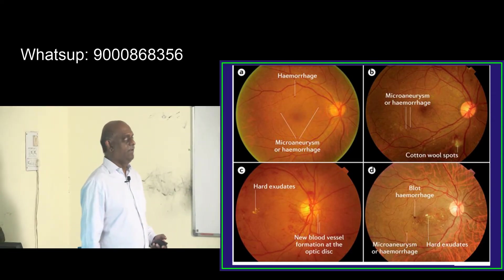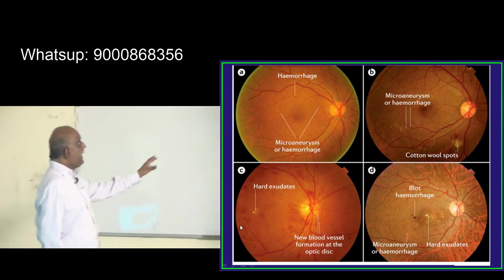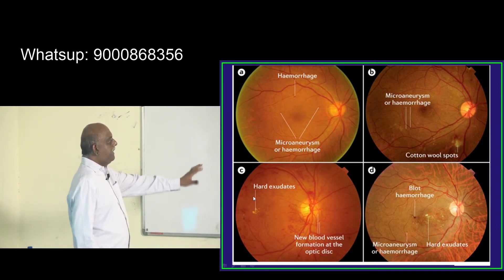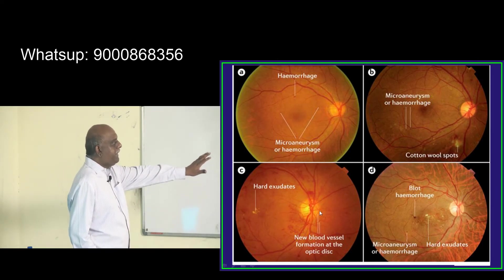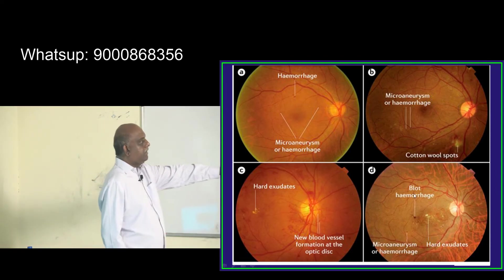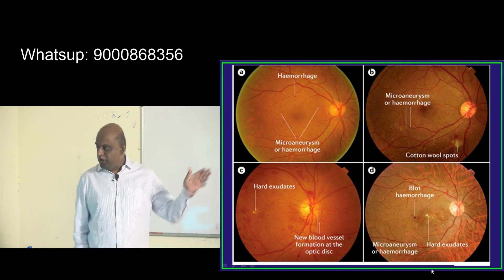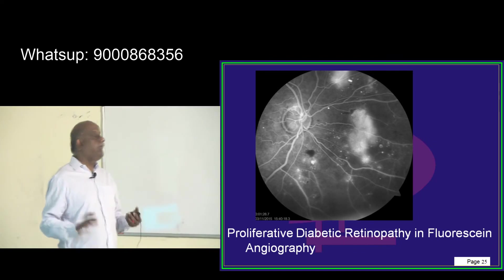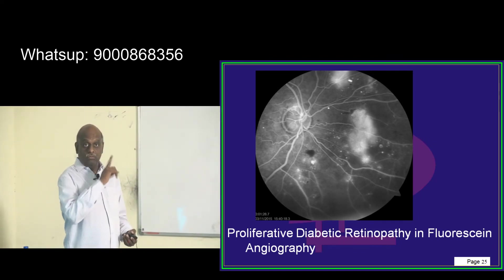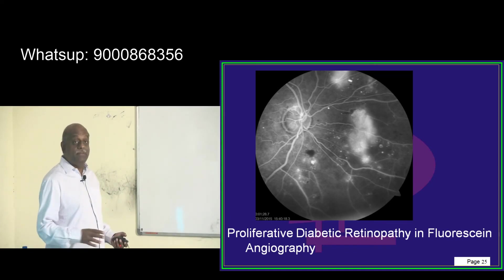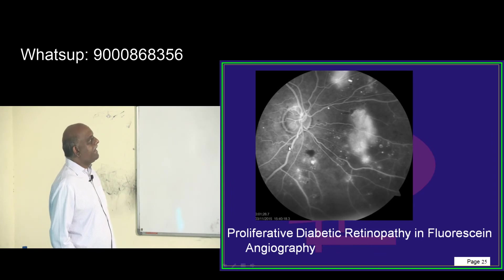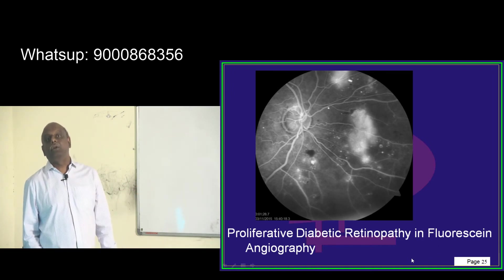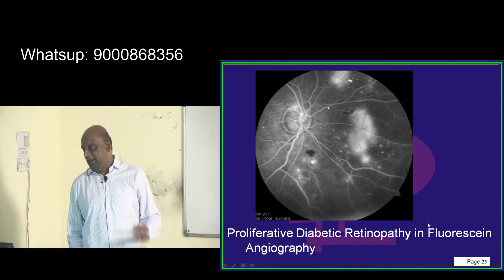The features of diabetic retinopathy to remember are: microaneurysms, hemorrhages, cotton wool spots, hard exudates, new blood vessel formation near the optic disc, and blot hemorrhages. This is how the progression occurs. On fluorescent angiography, in proliferative diabetic retinopathy you can find neovascularization on the optic disc area and the presence of large bleeds with leakage of fluorescent dye.